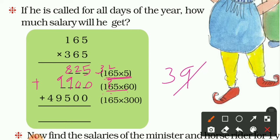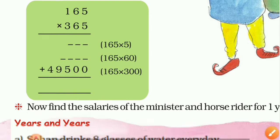Now add all three products. 5 + 0 + 0 = 5; 2 + 0 + 0 = 2; 8 + 9 + 5 = 22, write 2 carry 2; 9 + 9 + 2 = 20, write 0 carry 2; 4 + 4 + 2 = carry gives final total. So 60,225 rupees — that is the salary Shantaram would get for the full year.